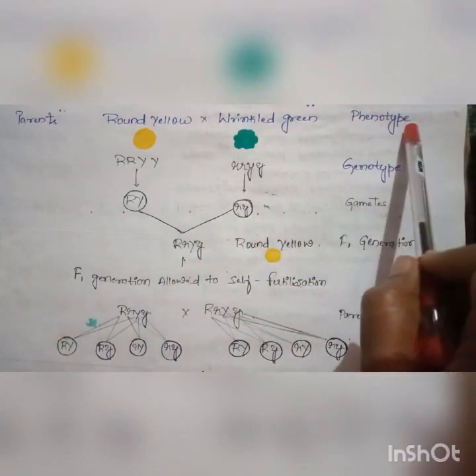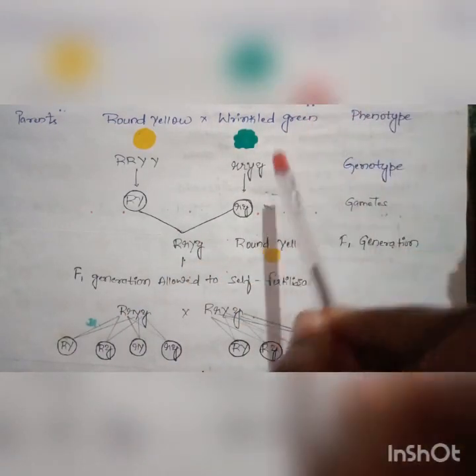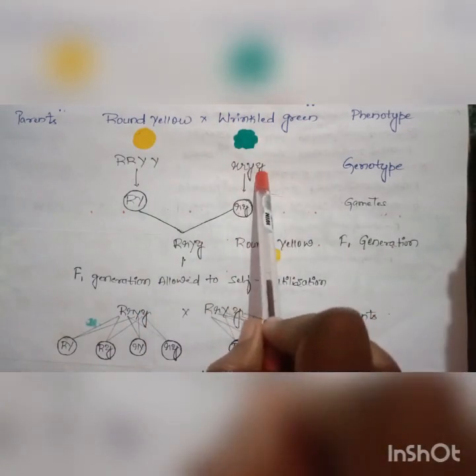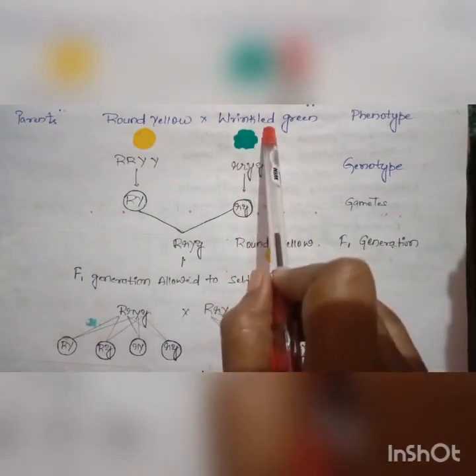The round yellow seeded plant is crossed with the wrinkled green seeded plant. This is the phenotype. The genotype is capital R capital R capital Y capital Y for round yellow, and small r small r small y small y for wrinkled green.